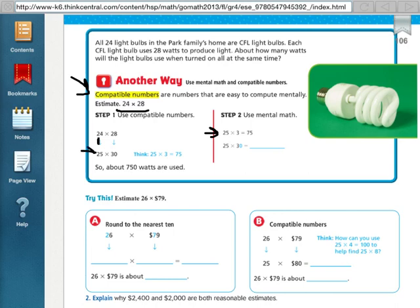25 times 30, which we then can do our basic fact 25 times 3, or 3 quarters is 75, and then add the zero from the 30. So 750. So that's compatible numbers.